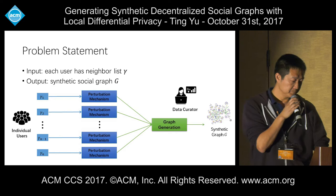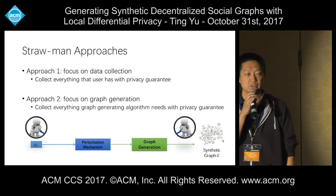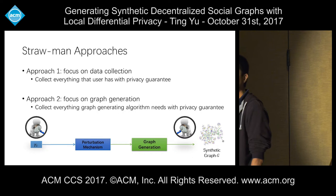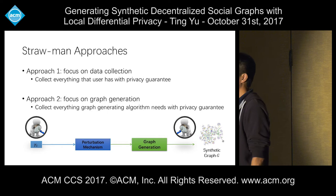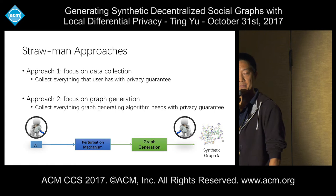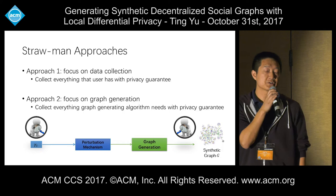Before presenting our approach, there are two intuitive strawman approaches, each focusing on different phases of the process. The first focuses on data collection—trying to get as much as possible about each user's neighbor list. The second focuses on the graph generation process: depending on which generation algorithm is used, certain parameters are needed. These parameters are derived from the social network, so if we can learn them, we can plug them into the algorithm and generate a graph.